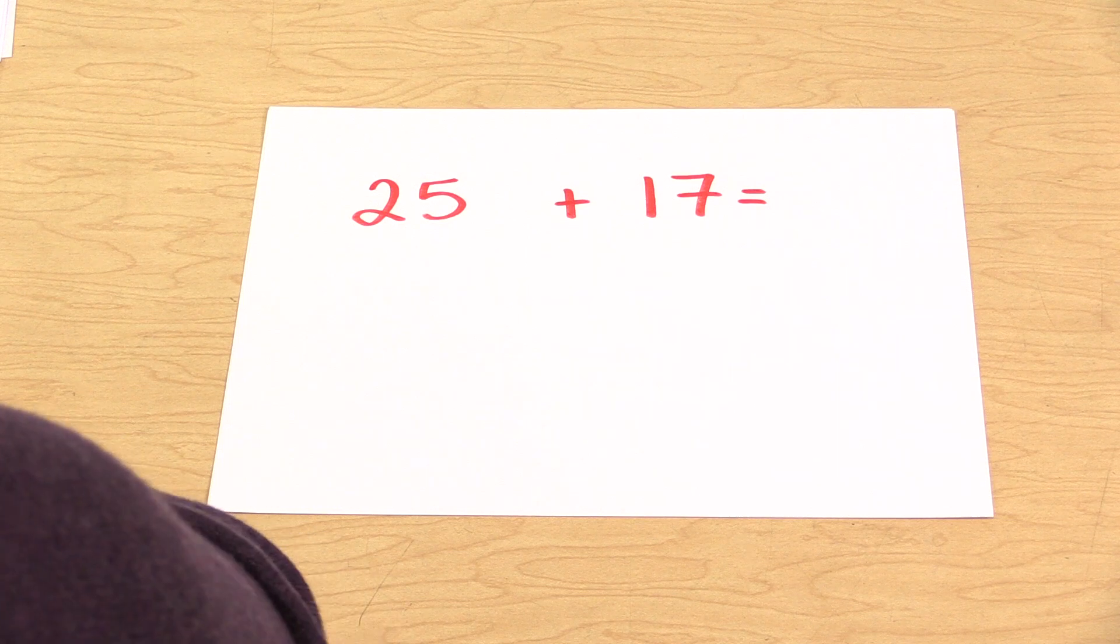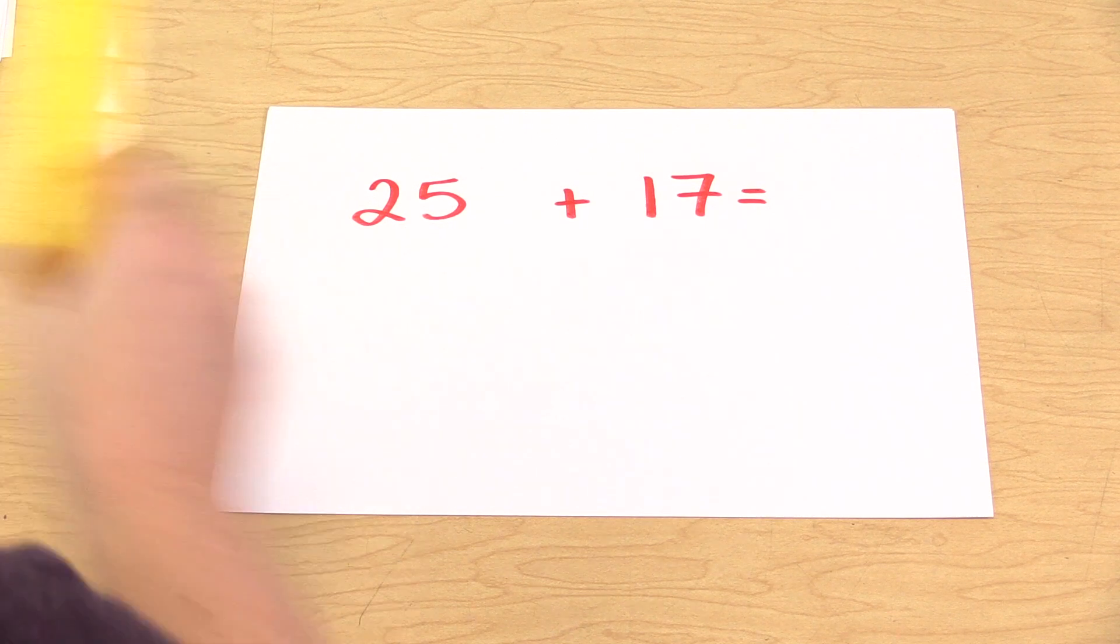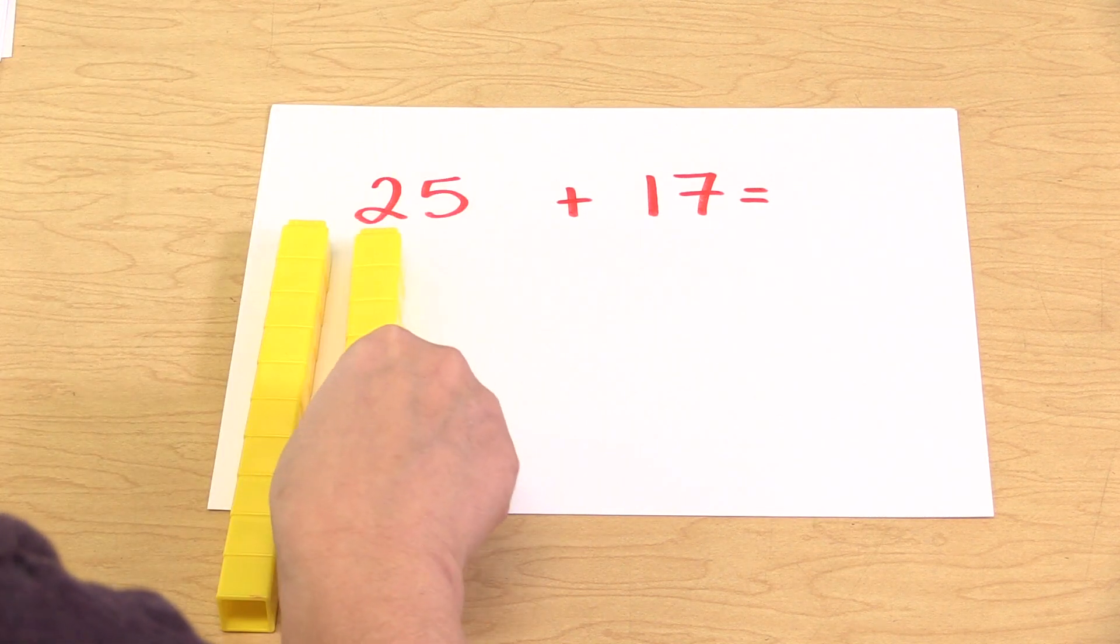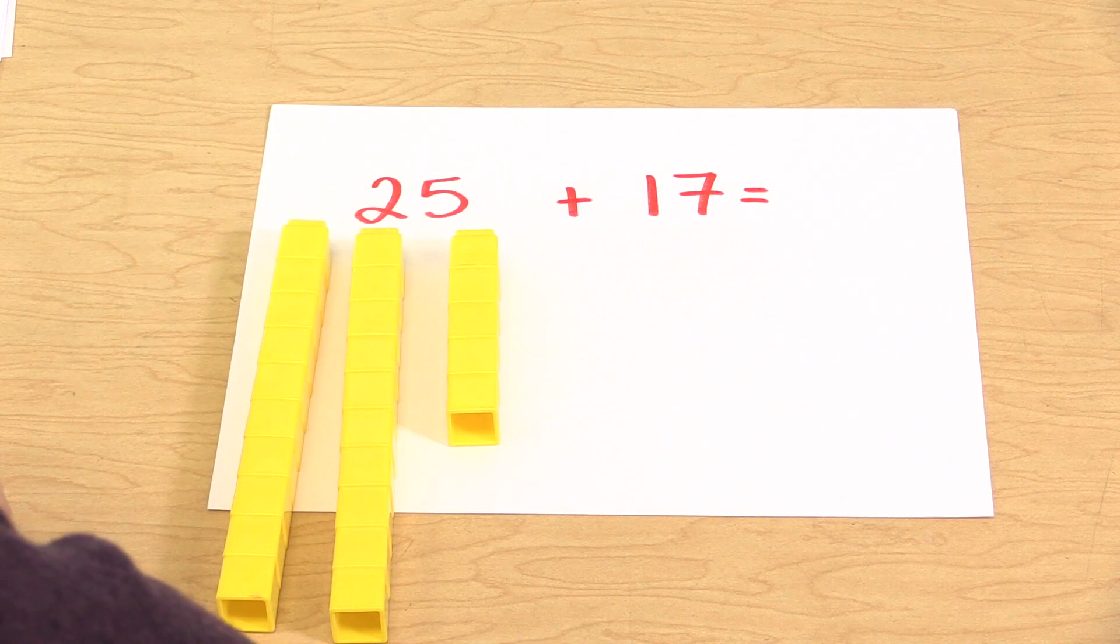the first thing we would do is represent the 25 with cubes. So we have 20 and 5, and then the 17.